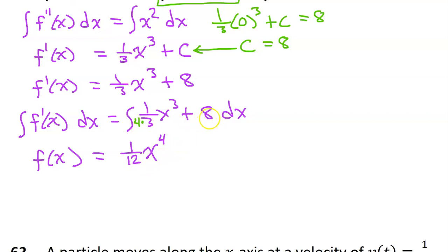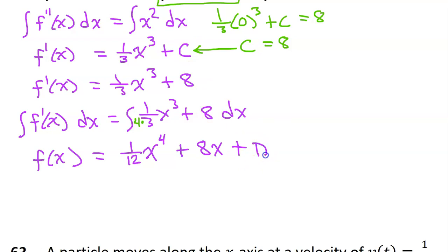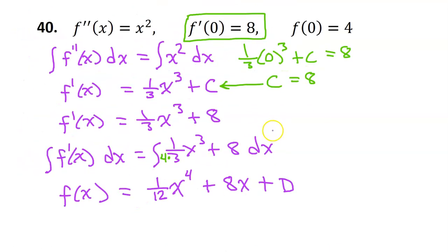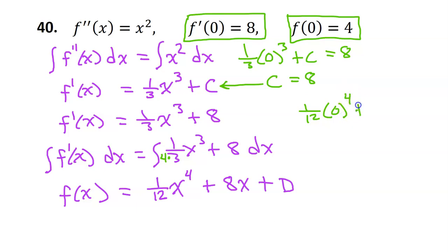Moving on to the 8: if I integrate a constant, it's just going to become blessed with an extra variable, so the integral of 8 is going to be 8x. And then we go ahead and add our constant of integration. We already used the letter c, so we are supposed to use a different letter — so instead of c, I'm going to put d this time. They gave us another initial condition to find d: f at 0 is equal to 4. So 1/12 times 0 to the fourth power plus 8 times 0 plus d is equal to 4. Both of these first two terms are just 0, so that gives us d equals 4.